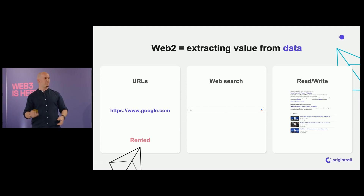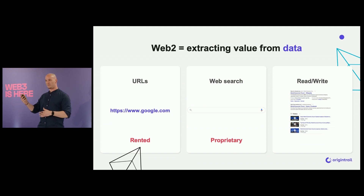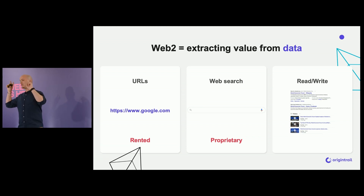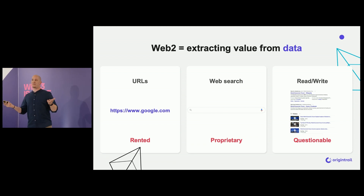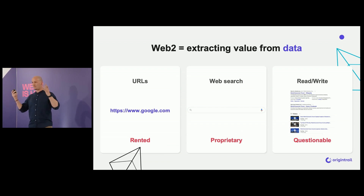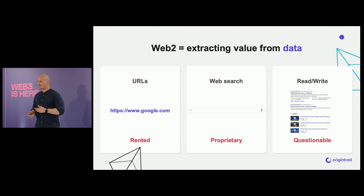The problems are: URLs you don't own, you really rent. Web search is proprietary — consider even your Twitter feed, because that's basically search for 'give me the tweets that I like.' And finally, reading and writing is questionable because of centralized infrastructure and very poor verifiability of information. We have a lot of issues with fake news. There is no way to verify any information whatsoever on Web2. However, that didn't stop a lot of companies from extracting a ton of data from Web2.